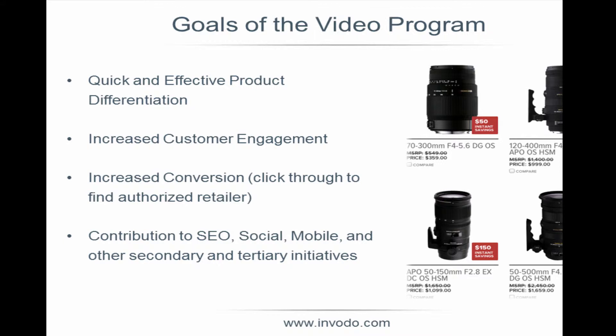Our goals were to quickly and effectively differentiate our products and increase customer engagement. Our primary conversion metric is purchase intent by clicking on a Find a Dealer button on the product pages — we do a very small percent of our sales direct; it's primarily to drive to the dealer. We have a number of products with a lot of overlap, so we wanted to give a video solution to teach everyone the key benefits and help them realize which lens was going to be right for them.